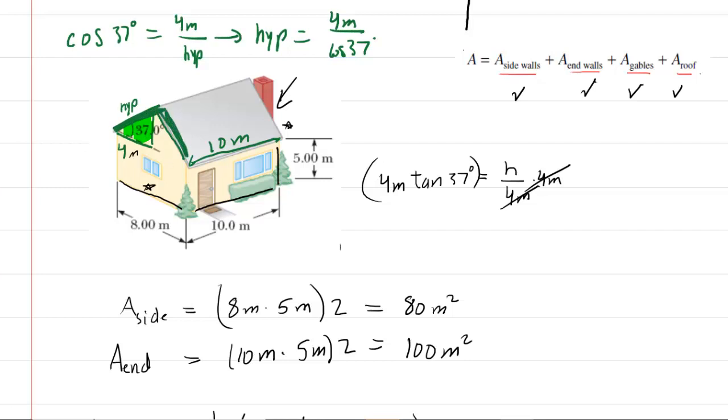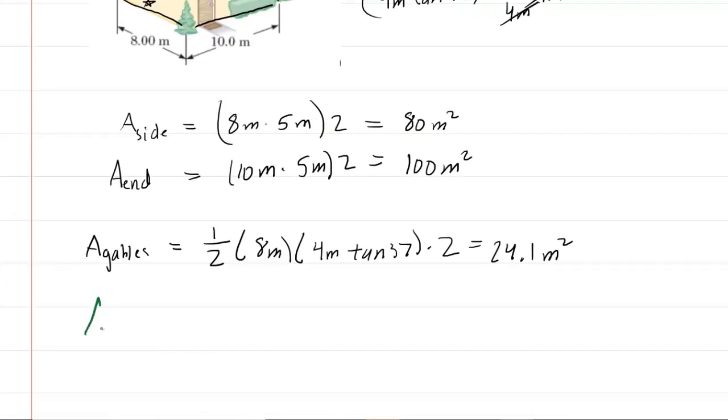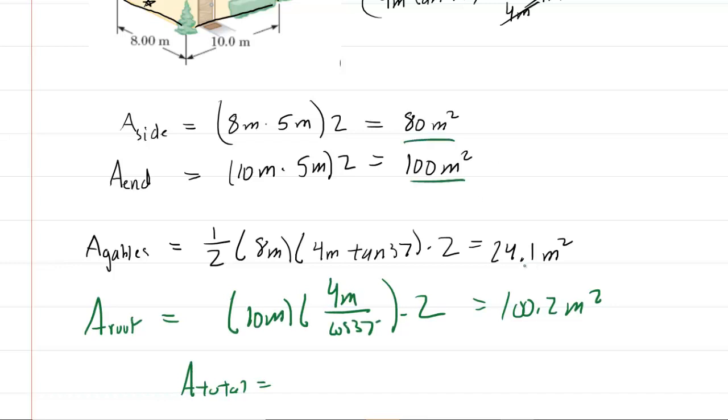That's the length of this dimension, which is the same as this dimension. Back to the calculation for the area of that roof, which is a rectangle. It's the length, which was 10 meters, multiplied by the width, which we determined was 4 meters over cosine of 37 degrees, and there are two of them. Pick up your calculator in degree mode, work this out, and you should get 100.2 meters squared. Now we can get the total area of the house by summing these four values. When you do that, you'll get a total area of 304.3 meters squared.